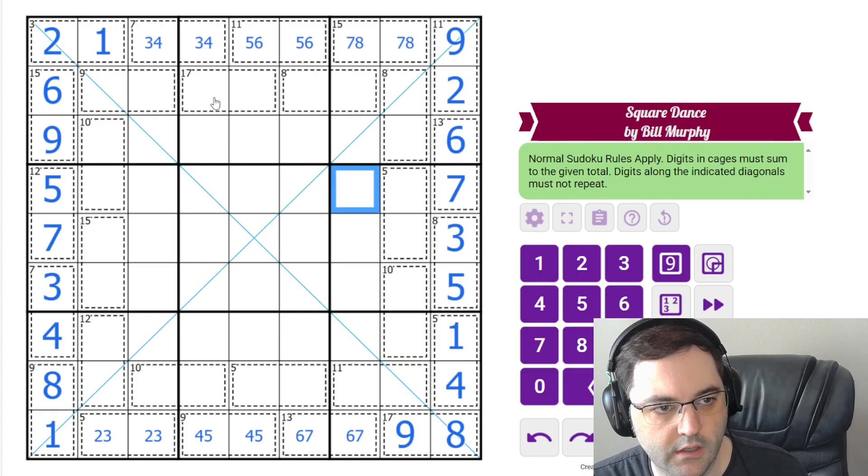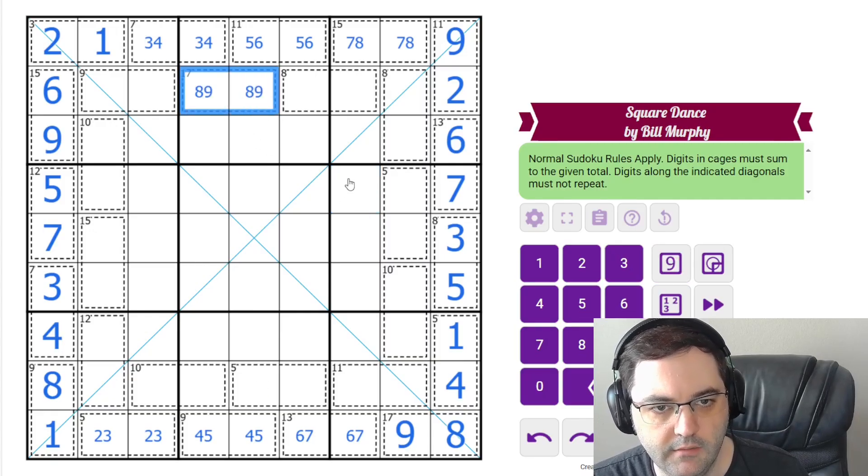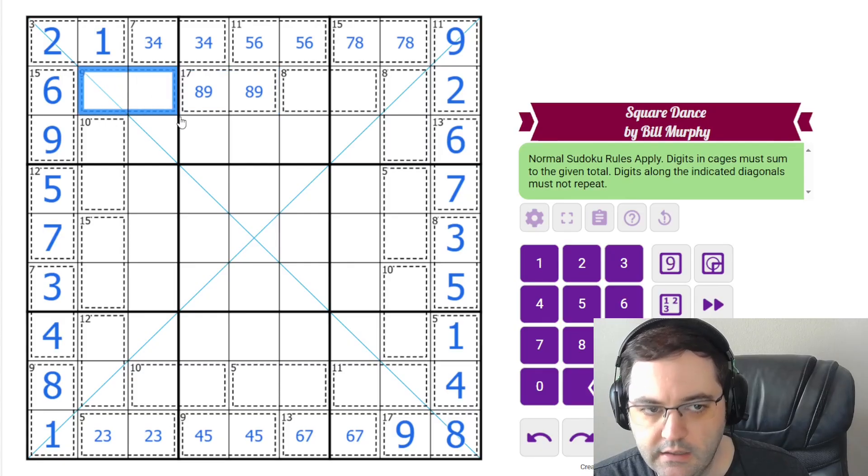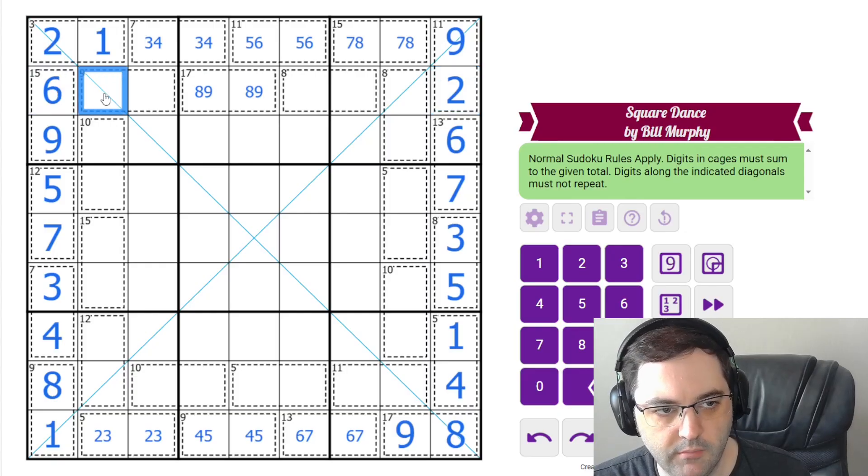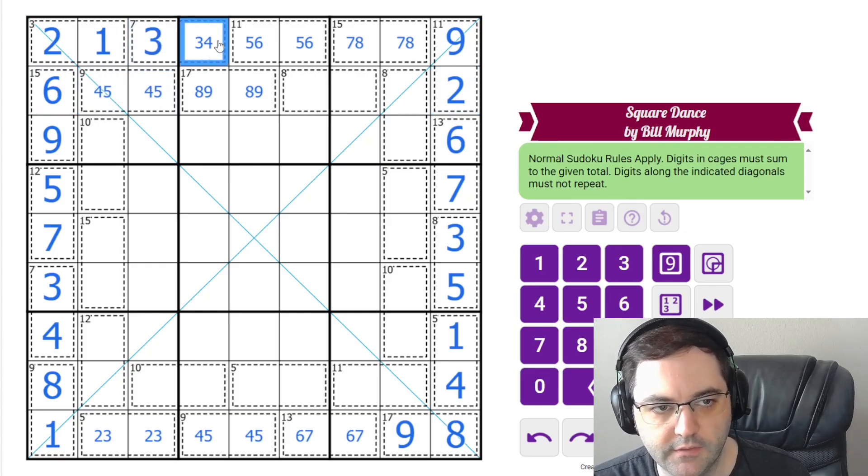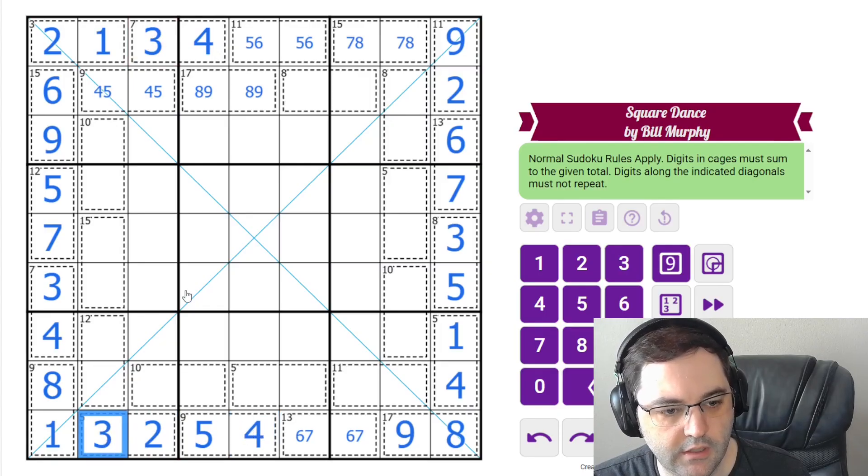Let's look at our other cages here. 17 again must be 8, 9. The 9 cage is surprisingly restricted here. It can't be 1, 8 because of the 8 in this cage. It can't be 2, 7. It can't be 3, 6. So it must be 4, 5. And that's going to give us 3, 4 here, 5, 4 here, and 2, 3 here.